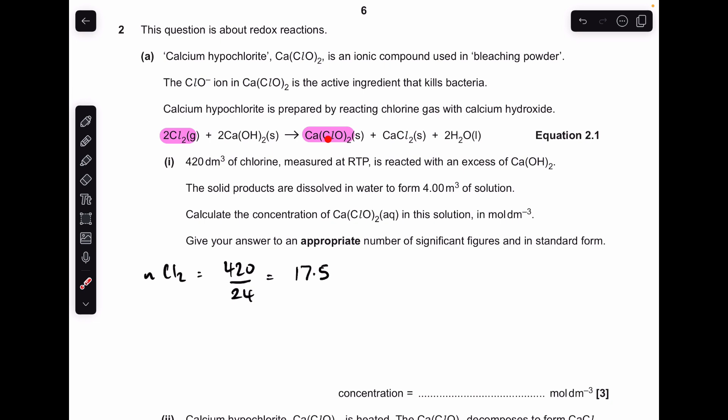Then we're going to use the mole ratio 2 to 1 to work out the moles of the calcium hypochlorite. That's coming out at 8.75 moles in 4 meters cubed. We need that in decimeters cubed so multiply by a thousand to put it in decimeters cubed.